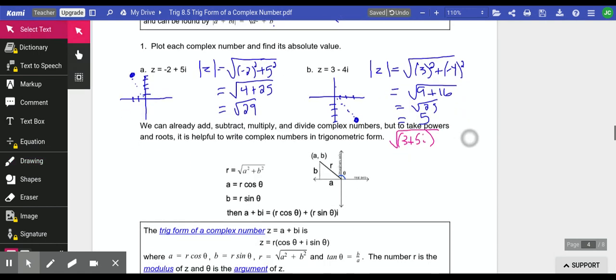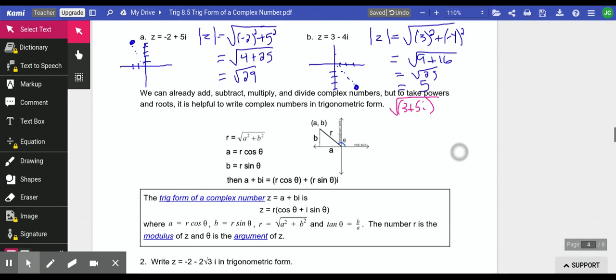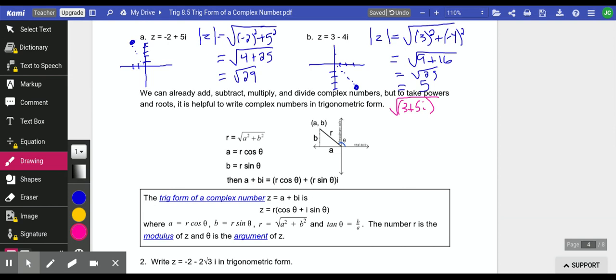In order to do those things, it is helpful to write our complex numbers in a different way. We call it trig form of a complex number. Here is our number a plus bi, and we've got it graphed here. This side is a, and this is b, and we call this radius r. So r we find just by using that distance formula, Pythagorean theorem.